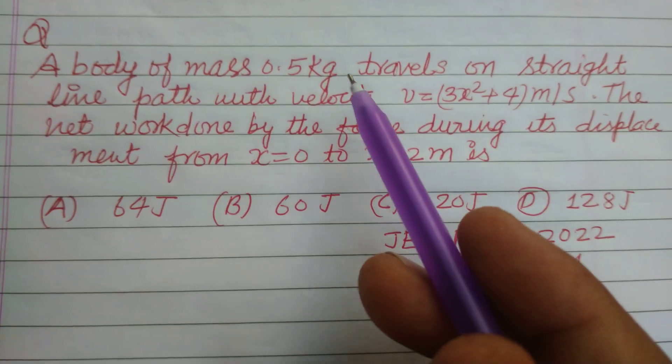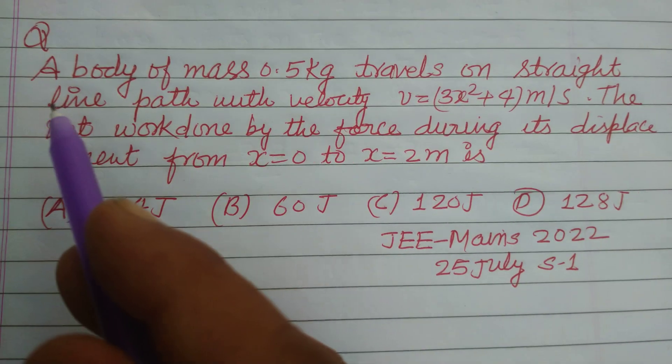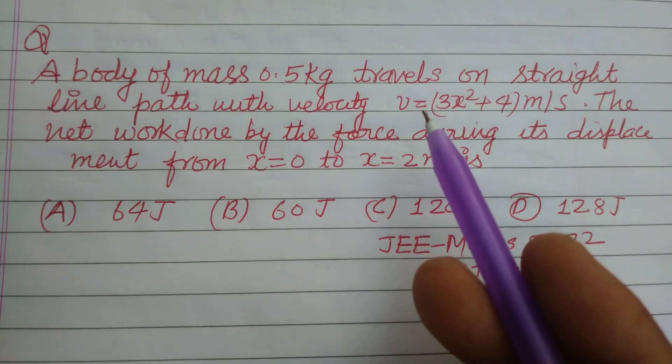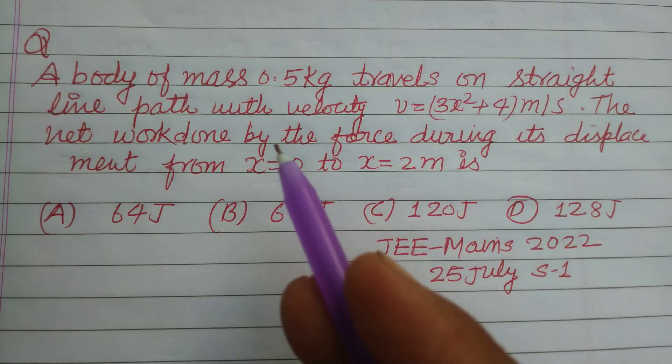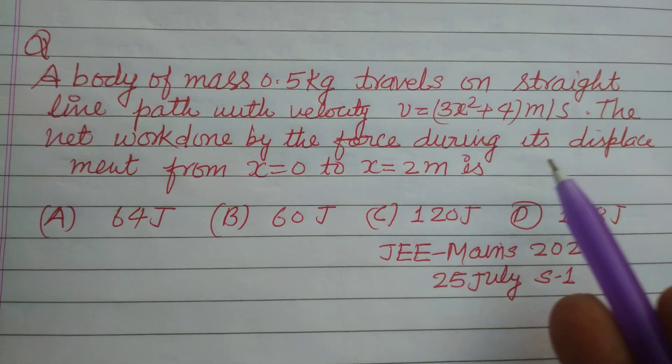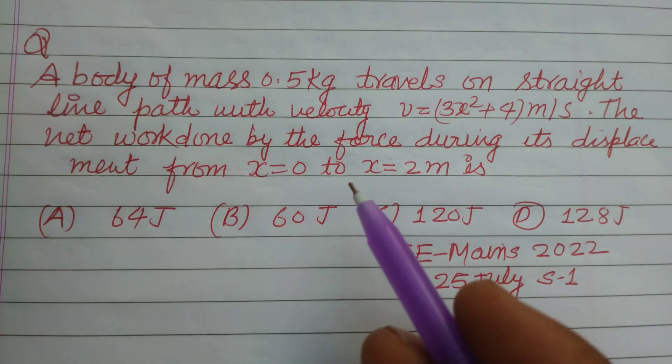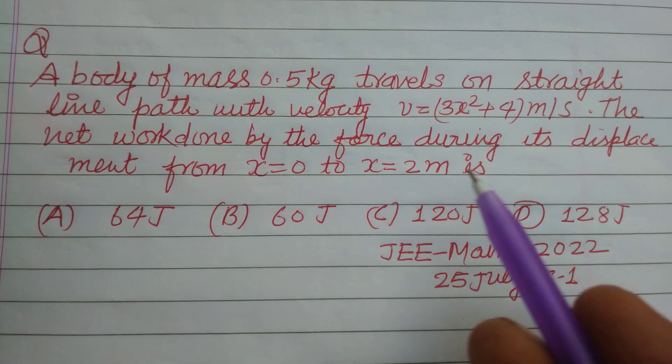A body of mass 0.5 kg travels on a straight line path with velocity v equal to 3x square plus 4 meters per second. The network done by the force during its displacement from x equal to 0 to x equal to 2 meters is.